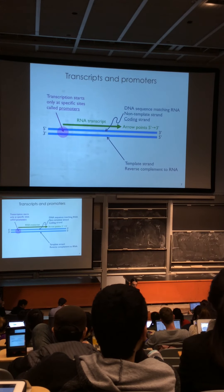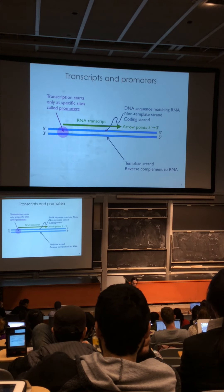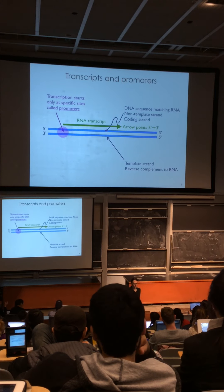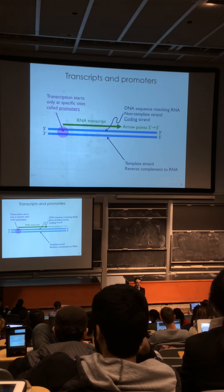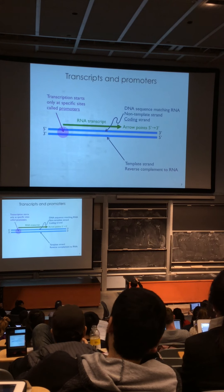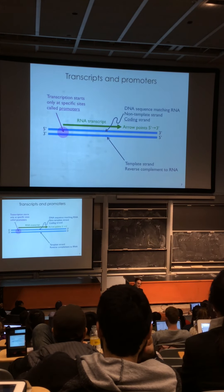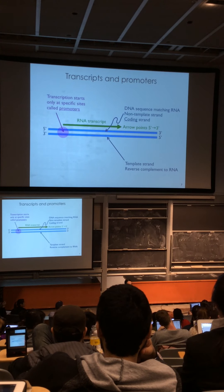Transcription doesn't happen just anywhere. There are very specific transcripts synthesized from any genome, corresponding to the genes. Transcription starts at specific sites called promoters. By convention, the RNA transcript is drawn as an arrow pointing 5' to 3'. Given a template strand and non-template strand, the arrow direction indicates which strand is coding. The sequence that appears in the RNA matches the coding strand, also called the non-template strand—this is the convention when writing DNA element sequences.